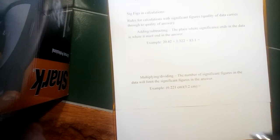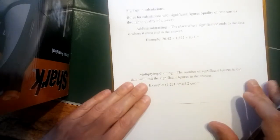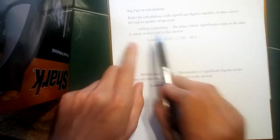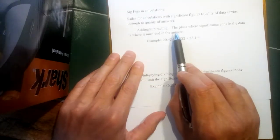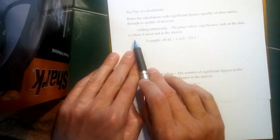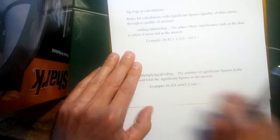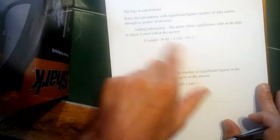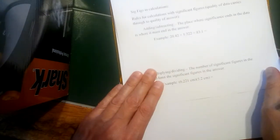So we'll kind of have to keep track of what mathematical operation we're doing because that will affect how we need to treat our data. So for adding and subtracting, the rule is the place where significance ends in the data is the place where it must end in the answer.